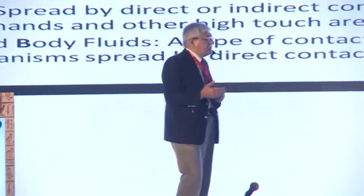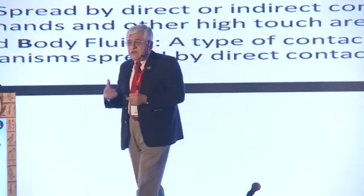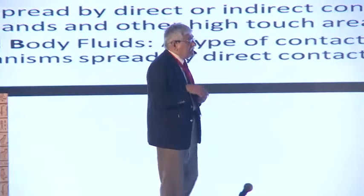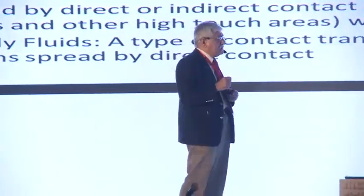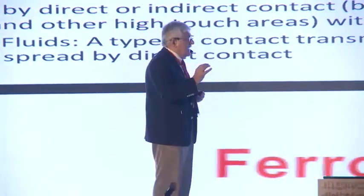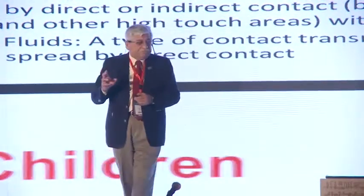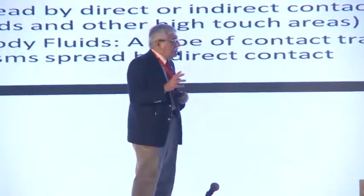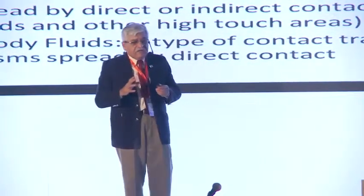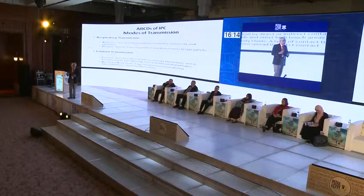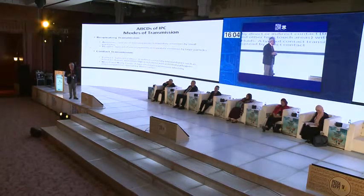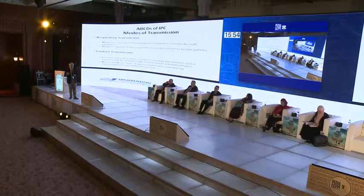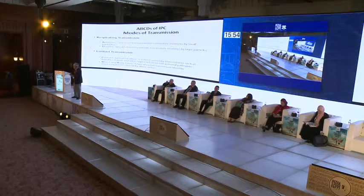The modes of transmission we face most in everyday practice are respiratory. Airborne and droplet are both respiratory transmissions — for airborne, microorganisms spread via smaller particles less than 5 microns; for droplet, it's larger particles greater than 5 microns. The heavier organisms can't travel more than 3 feet, whereas smaller particles can travel 3 to 6 feet or even farther depending on air movement. Both direct and indirect contact fall under contact precautions.